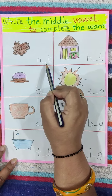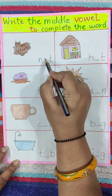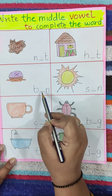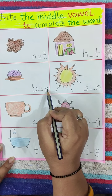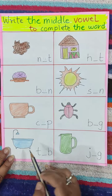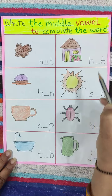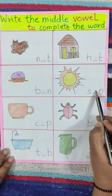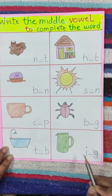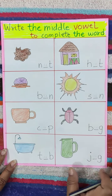So can you tell me which letter we will write here? Yes, absolutely correct — U. So N, U, T — nut. If we add U it will become B, U, N — bun. C, U, P — cup. T, U, B — tub. H, U, T — hut. S, U, N — sun. B, U, G — bug. And J, U, G — jug. Okay? Like this you have to do the worksheet.